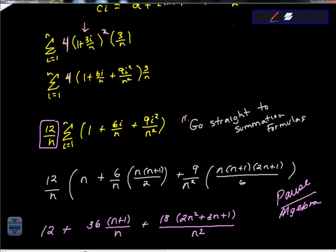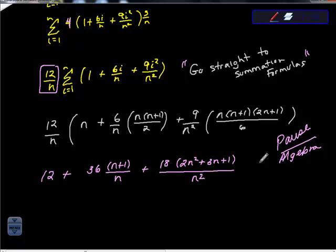Here, what I'm suggesting to you is that you consider going straight to your summation formulas. So when you go straight to your summation formulas, it might end up looking something like this. So if you go to summation of a constant, it's c times n. Well, 1 times n is n.